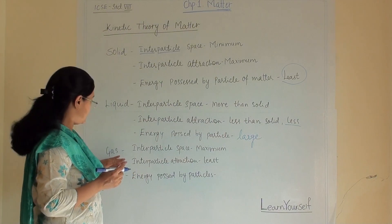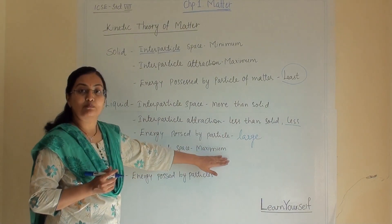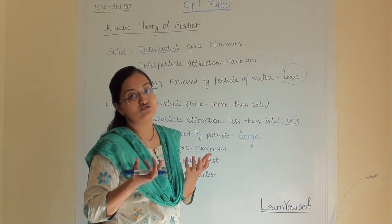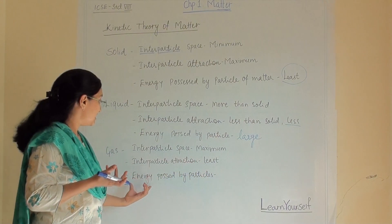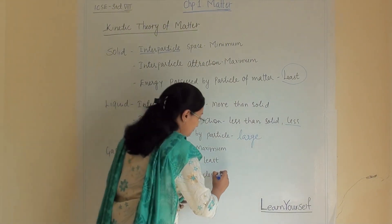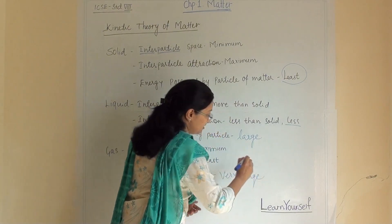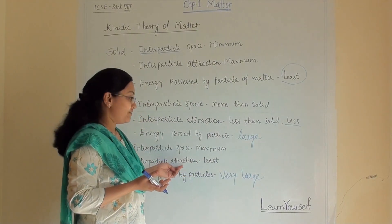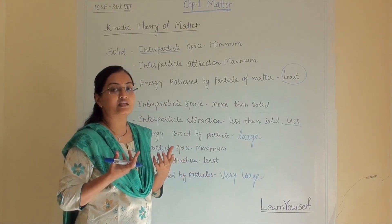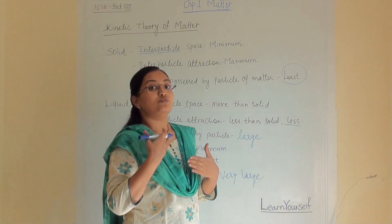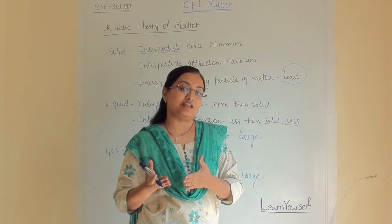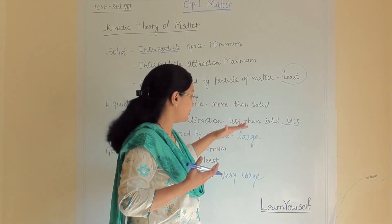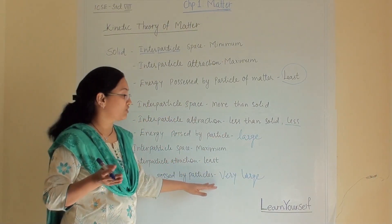In the gaseous state, the inter-particle space is maximum, so the inter-particle attraction is least. They have maximum space between atoms, so attraction is least. The energy possessed by the particles will be very large in gaseous atoms because they can move randomly, their attraction is least, and they have maximum space between them. The particles move freely and randomly — maximum compared to solid and liquid — so the energy possessed by gaseous molecules will be very large.